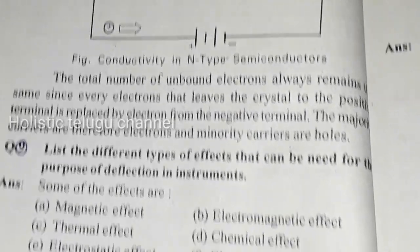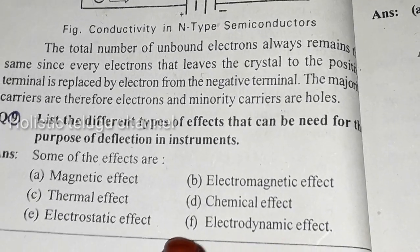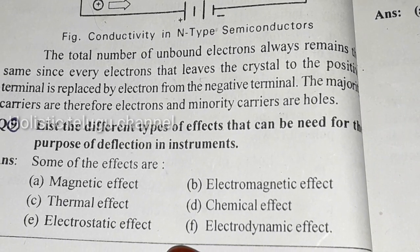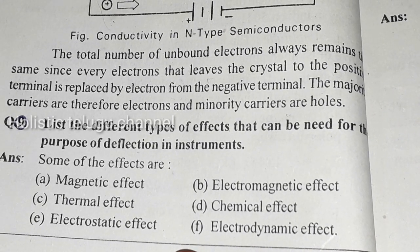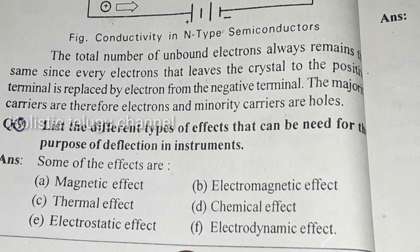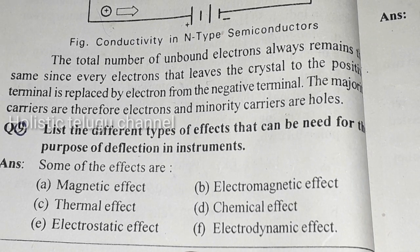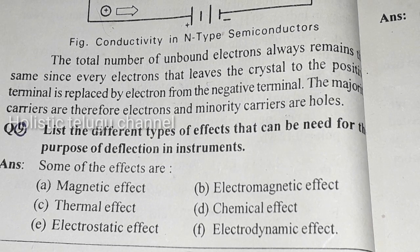Next question: list the different types of effects used for the purpose of deflection in instruments. Instrumental deflection uses the following effects: magnetic effect, thermal effect, electrostatic effect, electromagnetic effect, chemical effect, and electrodynamic effect.